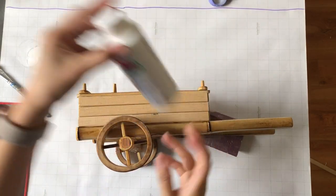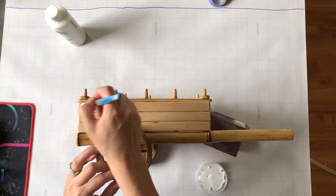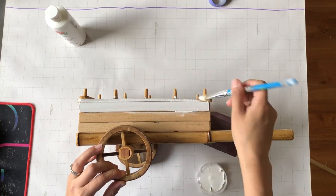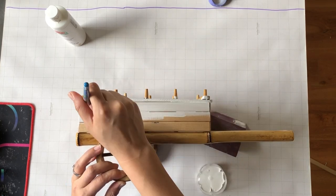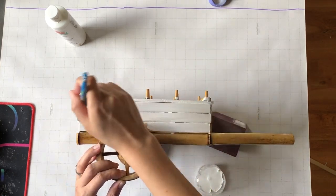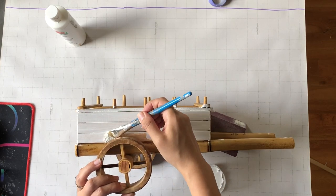Now I'm going to take my matte acrylic white paint and I'm going to be painting everything but the wheels. The wheels are going to be painted a different color. But as of now, this is what I am going to be painting.